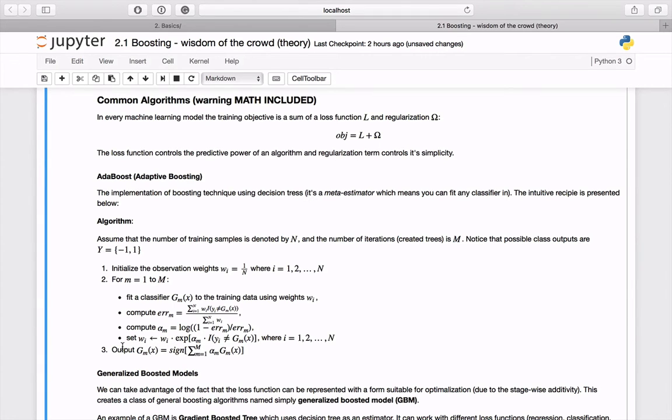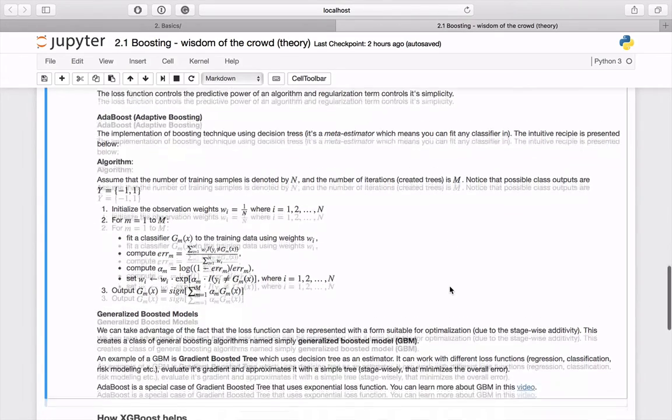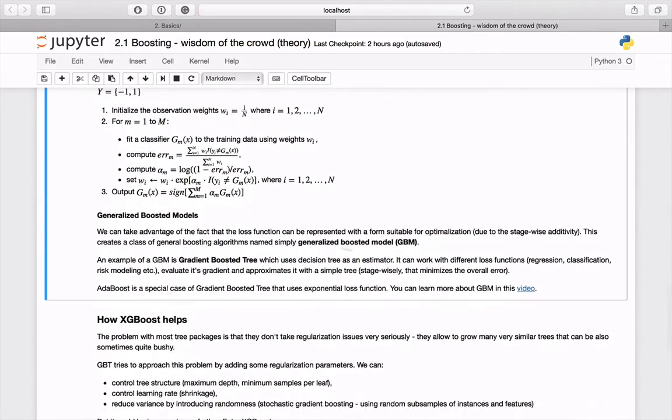In the last step we are creating the final classifier output taking into consideration all trees and their coefficients. We can also go one step further and realize that we can take advantage of the fact that the loss function can be represented with a form suitable for optimization.